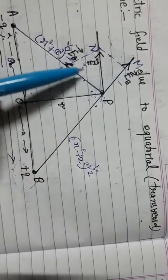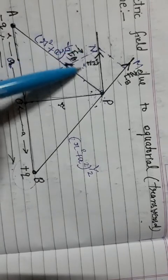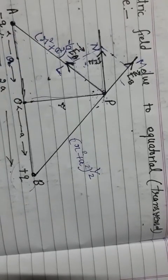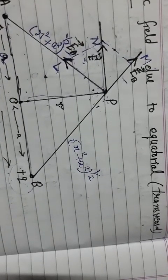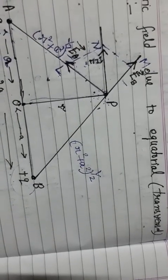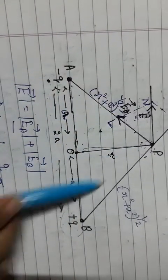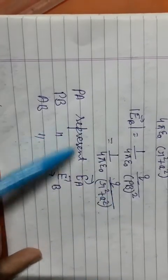PN represents the net electric field vector. Next, we apply the triangle law of vector addition: side PA represents EA vector, side PB represents EB vector, and side AB represents the net electric field E.